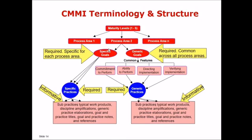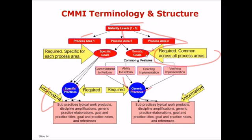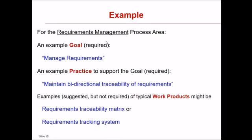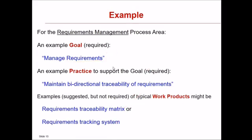The CMMI terminology and structure: at each level from one to five, there are process areas, each with specific goals and common generic goals required across all process areas, and specific practices to be followed. For example, for the requirement management process area, a goal might be to 'manage requirements,' and an example practice supporting that goal would be to 'maintain bi-directional traceability of requirements.' Typical work products might include a requirements traceability matrix or requirements tracking system.